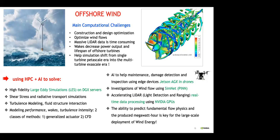HPC and AI have a role to play in all these wind energy challenges — addressing problems and helping accelerate the simulation codes used in this domain. AI could also help with maintenance, damage detection, and inspection of large rotating machines, especially offshore ones we want to visit as little as possible. AI could also accelerate real-time data processing for more exact wind speed and direction. In conclusion, HPC and AI can improve the three main challenges in wind energy: the understanding of wind flows, the improvement of materials and system dynamics, and the optimization and control of fleets of wind plants.